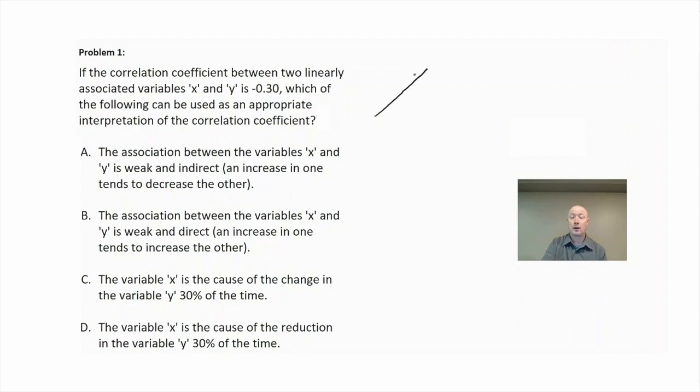The closer your correlation coefficient is to positive one, the more tightly packed the data is forming a line. So if your correlation coefficient is not near one, we're going to have an association that may not be close to that line of best fit. So the first thing I'm going to eliminate are choices C and D.